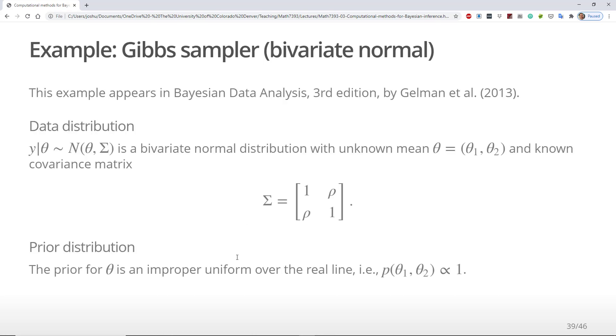Let's consider an example about how to implement a Gibbs sampler. This is an unrealistic but helpful example provided by Gelman et al. in the third edition of their excellent book, Bayesian Data Analysis. Assume the data distribution is bivariate normal with unknown mean theta and known covariance matrix sigma. The covariance matrix has ones along the diagonal and known correlation rho in the off-diagonal.